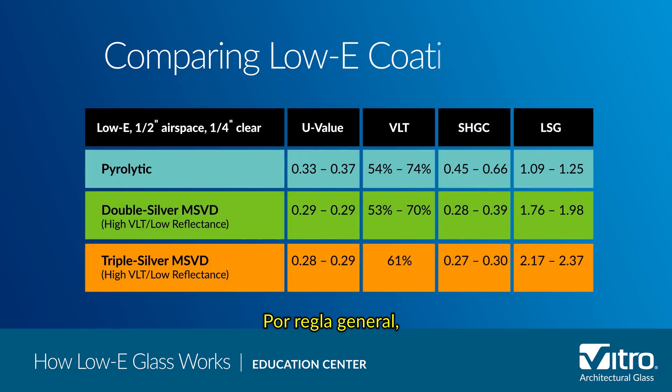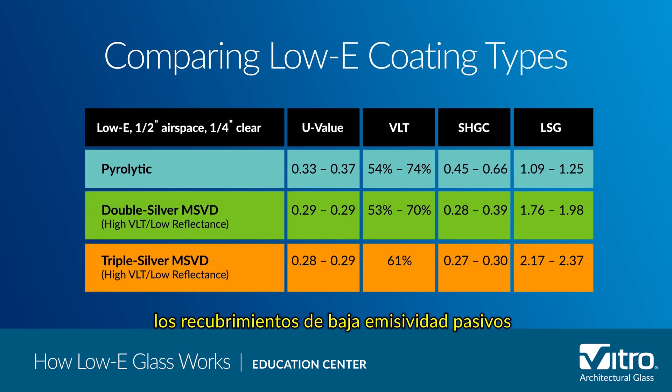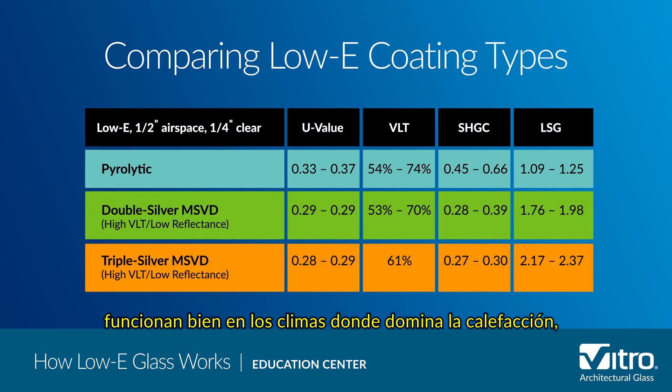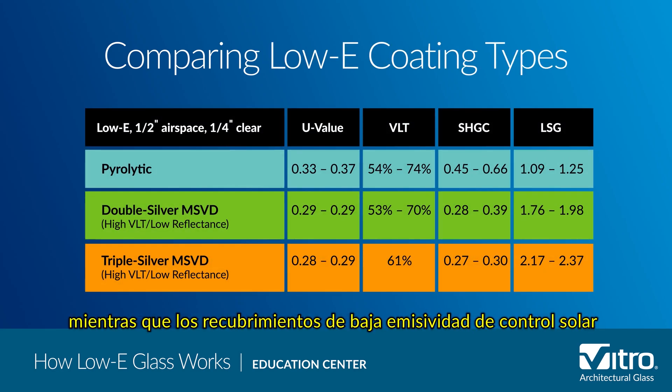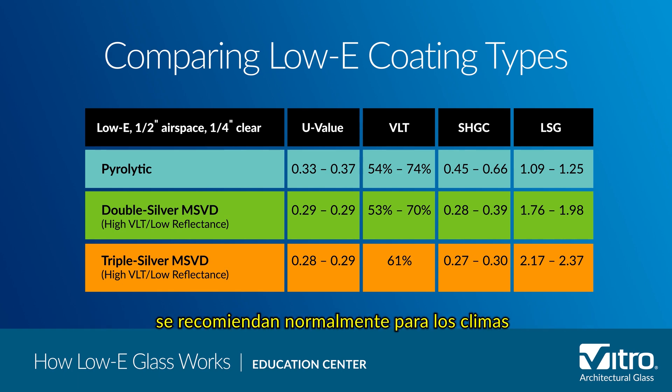As a general rule, passive low-e coatings work well in heating-dominated climates, while solar control low-e coatings are typically recommended for cooling-dominated climates.